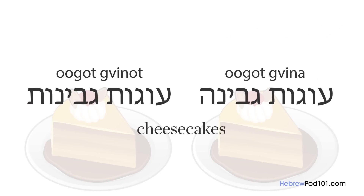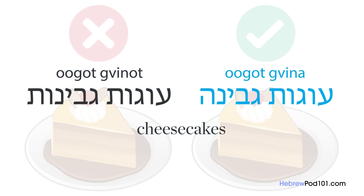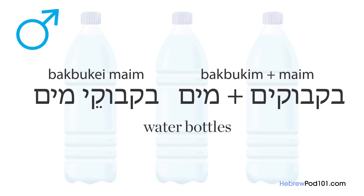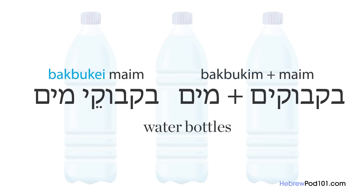Another issue is the plural form of these compounds. Like in English, when multiplying the compound, only the main noun takes the plural form. For cheesecakes, we say 'ugot gvina,' not 'ugot gvinot.' If the main noun is masculine and plural, the plural masculine ending '-im' becomes '-ay.' For water bottles, the plural of 'bakbuk' — 'bakbukim' — turns into 'bakbukay maim.'